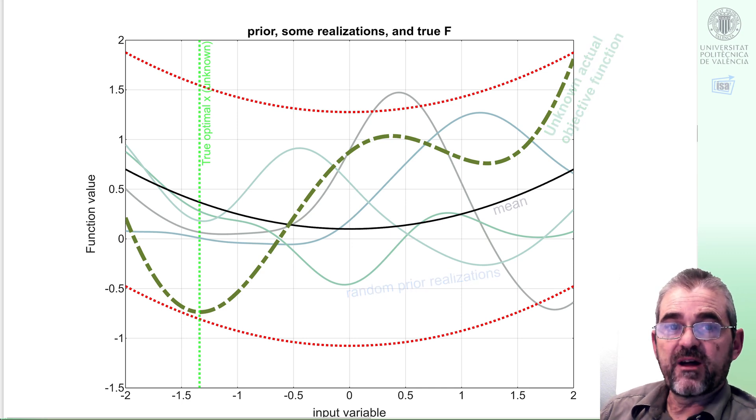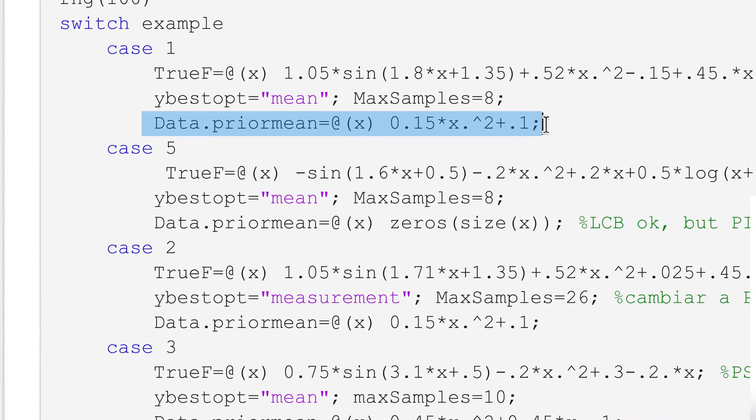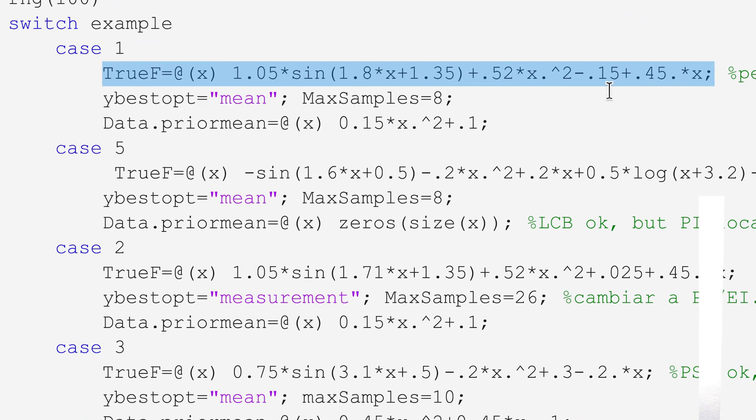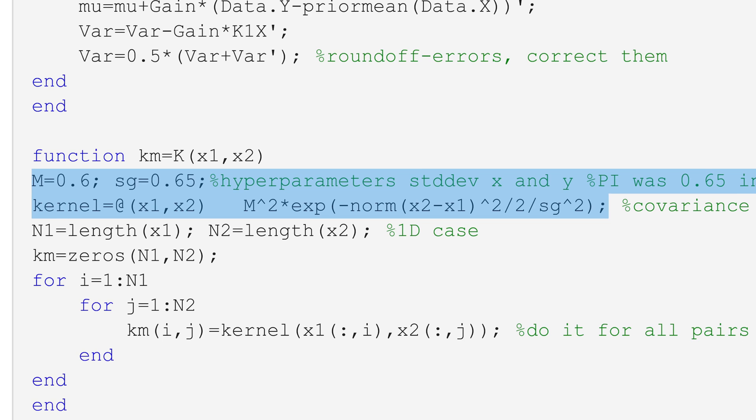Which is our prior? Well, we will use this prior mean, of course different to the true function we are testing, and this squared exponential kernel will be the one we use.